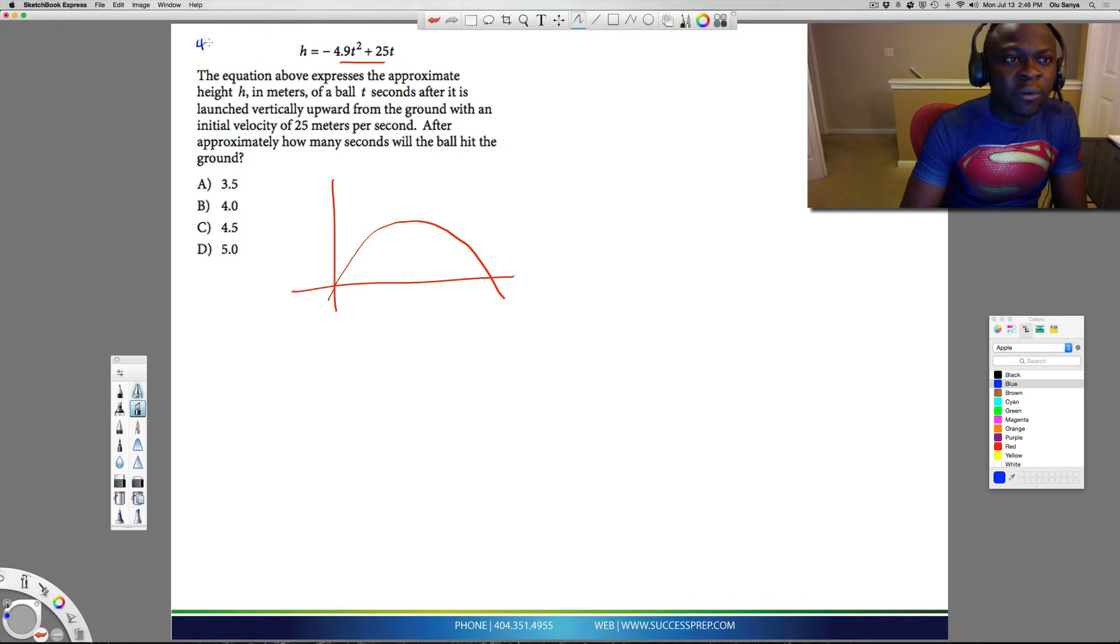say this had been 4.9t² plus 25t, where it's positive instead of this negative, your graph will need to look kind of sort of like that. The curve will be looking upwards towards a positive direction. But because it's negative, your curve actually will need to look downwards, kind of similar to what I've drawn here.